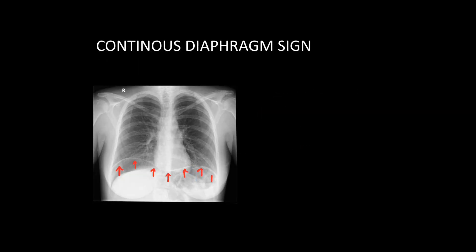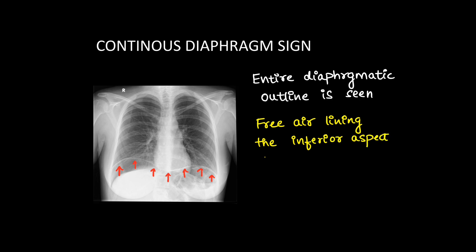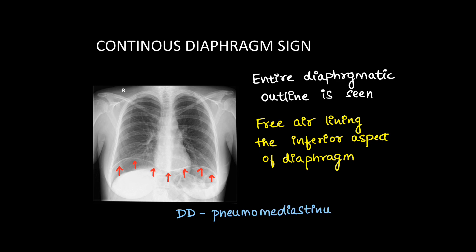Another classic sign is the continuous diaphragm sign. The entire diaphragm shadow can be well visualized because it is outlined by air beneath it — free air is lining the inferior aspect of the entire diaphragm. Continuous diaphragm sign is also seen in cases of pneumomediastinum, where free air is collected above the diaphragm.